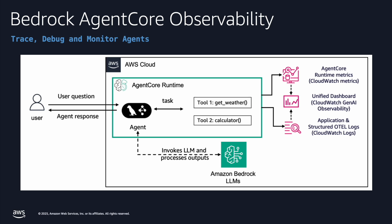AgentCore provides comprehensive observability capabilities that enable you to not only build agents with necessary tools and resources, but also gain complete visibility into their operations through detailed tracing, performance metrics, and execution monitoring. The platform leverages OpenTelemetry standards to deliver logs, metrics, and other traces that integrate seamlessly with CloudWatch.